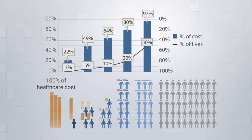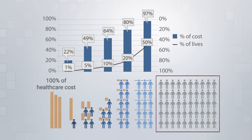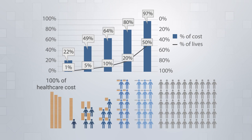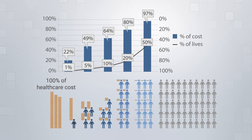If insurance and risk pooling did not exist, every person would need to pay for their own healthcare costs. Most people are healthy and do not have a lot of healthcare expenses each year. For those who are ill or who have accidents, however, the costs could be debilitating.